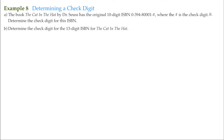For this example we will continue determining a check digit for ISBN numbers. For part A, the book 'The Cat in the Hat' by Dr. Seuss has the original 10-digit ISBN 039480001#, where # is the check digit we need to determine. This is the original 10-digit ISBN for this book.